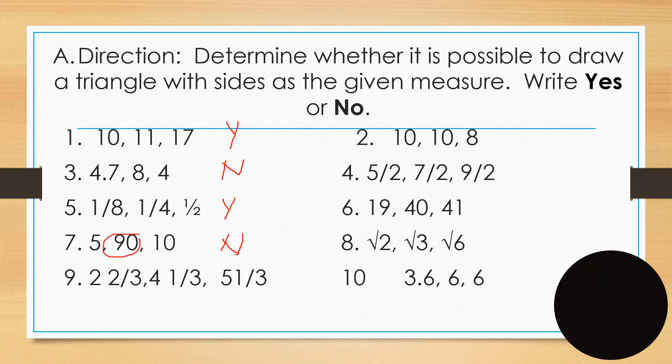For example, we have 2.5, 4.1, 5. That's yes. So determine whether it is possible to draw a triangle with sides as given measure. 10, 11, 17. What do you think? I think it's possible. Yes. 4, 4.7, 8, and 4. No. Because it's too long for 8. 1.8, 1.4, 1 half. Yes. 5, 90, 10. No. Why? 90 is too big.